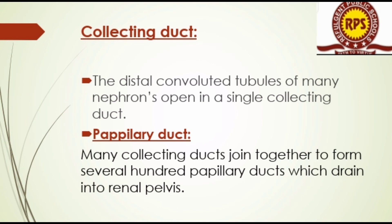The distal convoluted tubules of many nephrons open into a single collecting duct and papillary duct. Many collecting ducts join together to form several hundred papillary ducts, which drain into the renal pelvis.